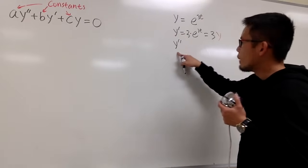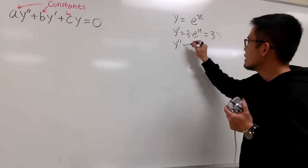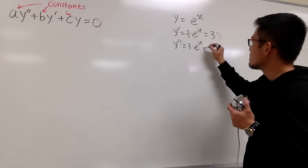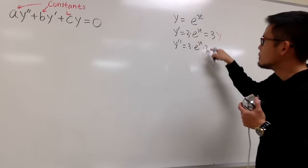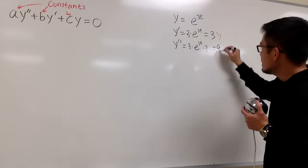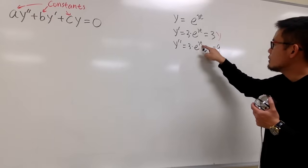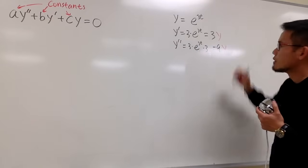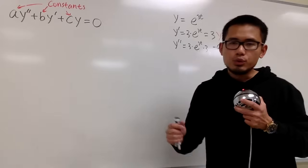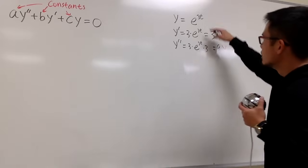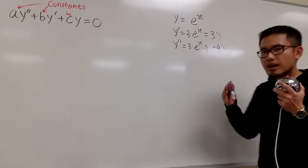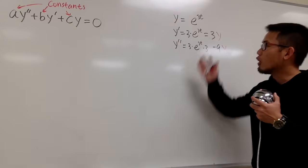And likewise, doing it again: y'' keeps the 3 times e to the 3t, but then we multiply by 3 again by the chain rule. 3 times 3 is 9, and e to the 3t is the original. So whenever you have e to some power, the first and second derivatives are just constant multiples of the original.